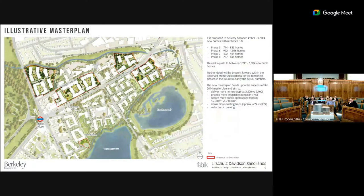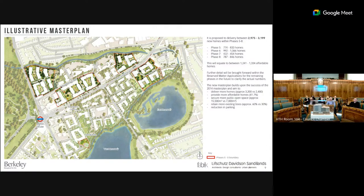What's on screen is the illustrative masterplan that is now live on the consultation website. Overall, the masterplan uplifts the number of homes compared to the 2014 scheme. We're looking at a number of between just under 3,000 to 3,200 — as this is an outline application that is a range at the moment, depending on the size of the houses as they come forward in individual reserved matters applications. In terms of affordable housing, depending again on unit size, that will bring between 1,200 and 1,334 affordable homes across both tenures.